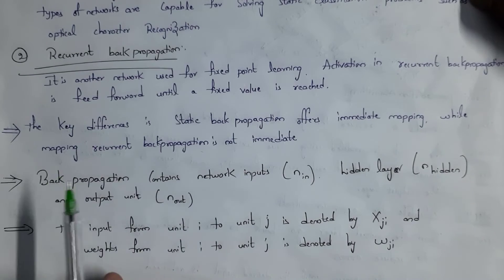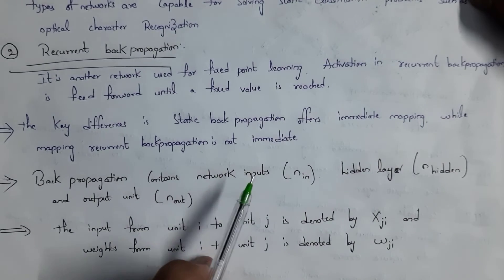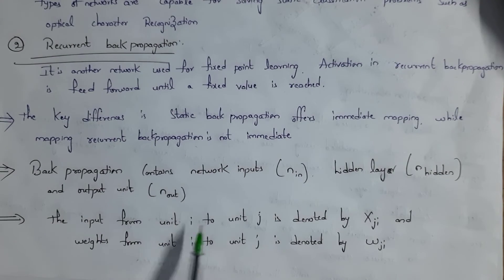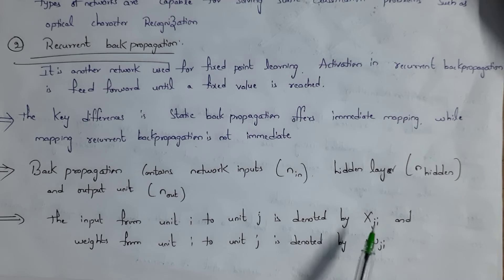Backpropagation contains input layer, hidden layer and output layer. Input from unit i to unit j is denoted by xji and weights from unit i to unit j is denoted by wji.